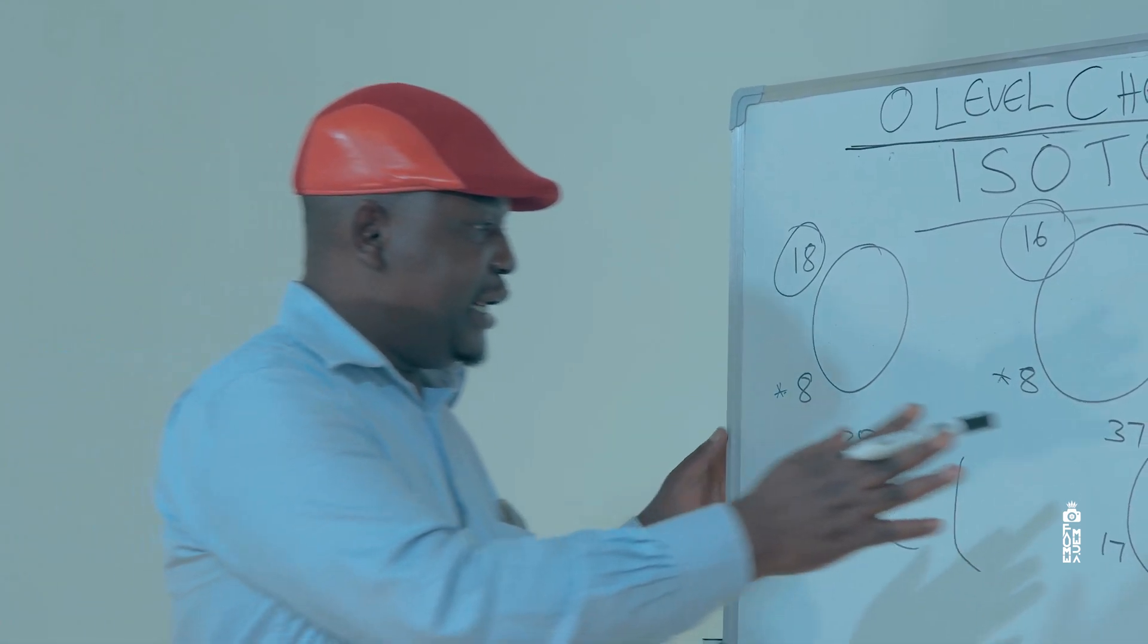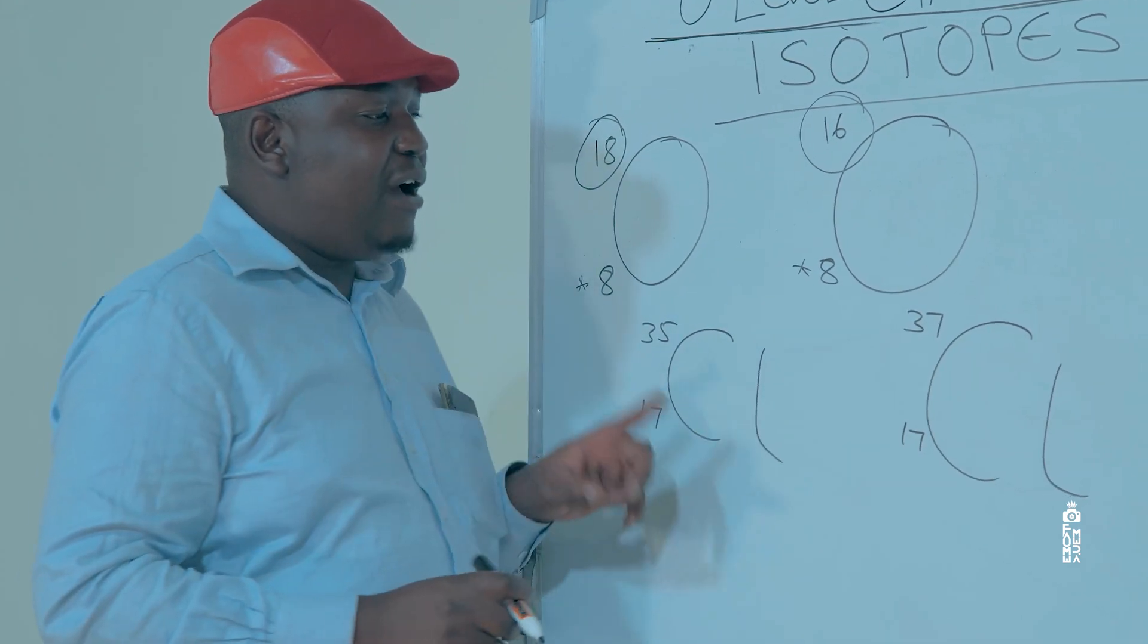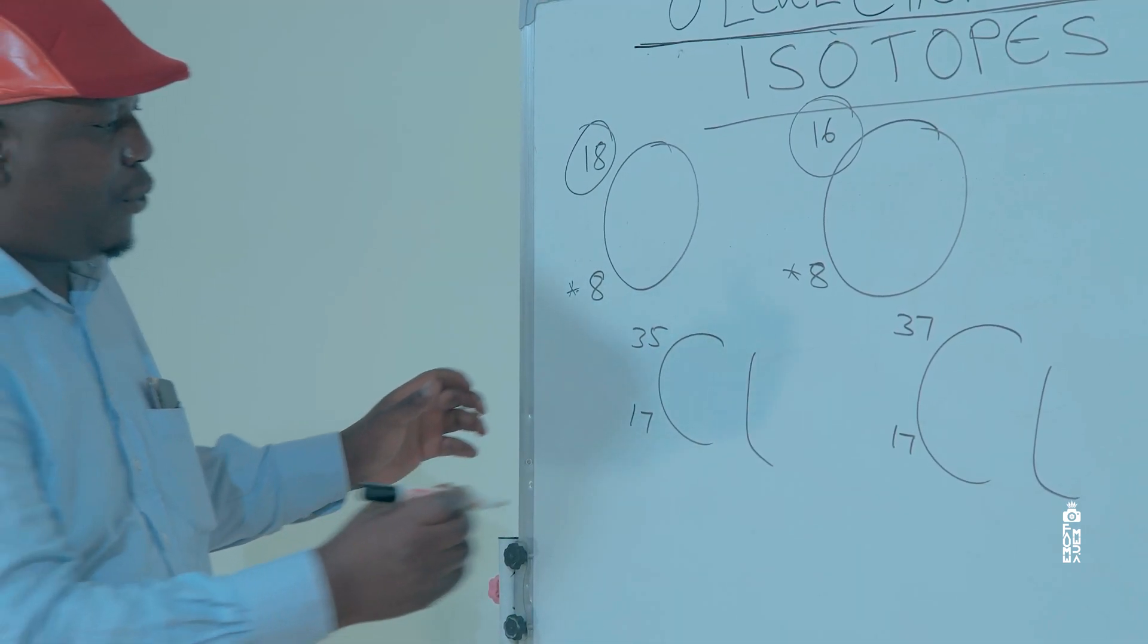We have chlorine 35,17, chlorine 37,17. However, if you go in the periodic table, chlorine has got 35.5 as the mass number, and this is because of the relative abundances.